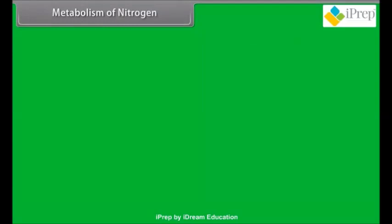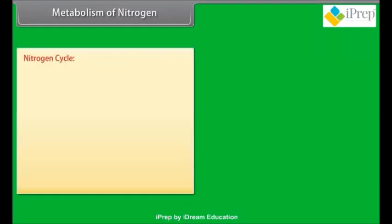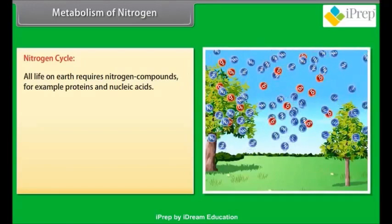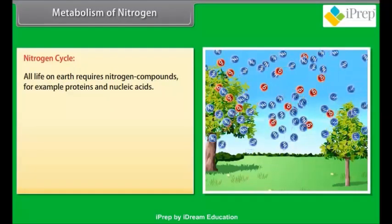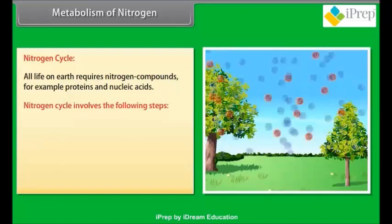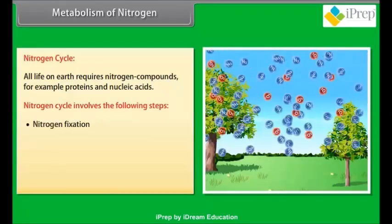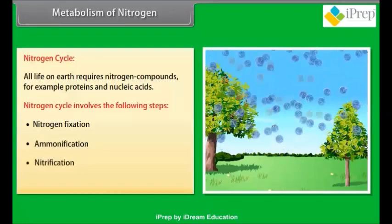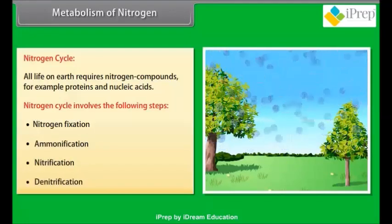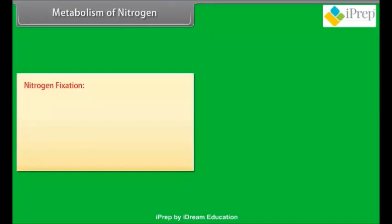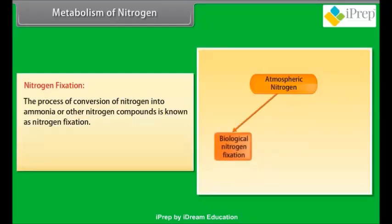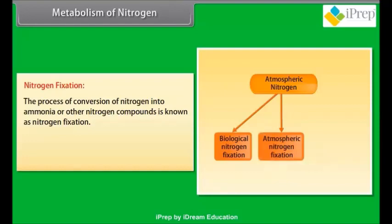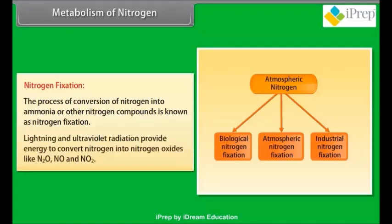Metabolism of nitrogen — nitrogen cycle: all life on earth requires nitrogen compounds, for example proteins and nucleic acids. The nitrogen cycle involves the following steps: nitrogen fixation, ammonification, nitrification, and denitrification. Nitrogen fixation is the process of conversion of nitrogen into ammonia or other nitrogen compounds. Lightning and ultraviolet radiation provide energy to convert nitrogen into nitrogen oxides like N₂O, NO, and NO₂.